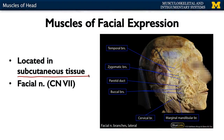Embryologically, muscles of facial expression all develop from the same sheet. When you have similar embryological development, that indicates similar innervation. All muscles of facial expression are going to be innervated by the facial nerve, or cranial nerve seven. Facial nerve innervates facial muscles — anatomy really makes sense here.